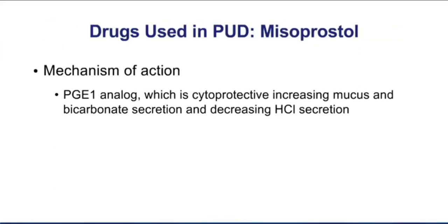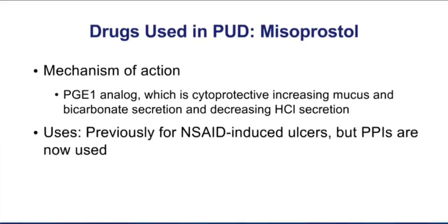The drug misoprostol is a PGE1 analog. Misoprostol has an ability to increase mucus and bicarbonate secretion, in addition to decreasing the actions of the proton pump and thereby decreasing acid production. It was previously used for NSAID-induced ulcers — the use makes sense because patients taking NSAIDs have decreased prostaglandin production, and misoprostol can replace those prostaglandins. The problem is it's not nearly as effective, even for NSAID-induced ulcers, as proton pump inhibitors. So today, PPIs are more commonly used in the setting of NSAID-induced ulcers.